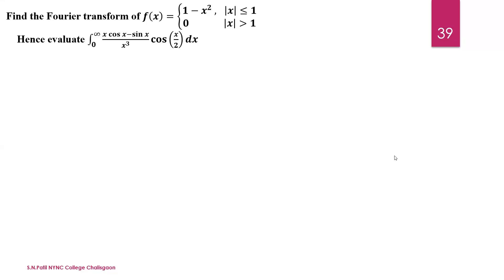Hello everyone, my name is S.N. Patil. In this video lecture, we will discuss the topic Fourier transform. The question is: find the Fourier transform of f(x) = 1 - x², when x lies between -1 to 1, and 0 when x is less than -1 and x is greater than 1.